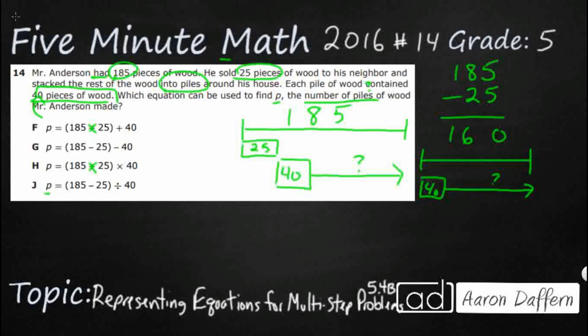Let's see if we can figure out how many 40s I can skip count here: 40, 80, 120, 160. So I've got four piles. This is actually a division representation. So it looks like we're going to subtract first and divide second.